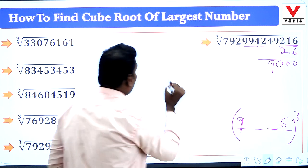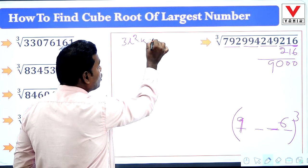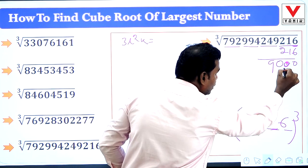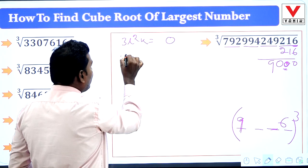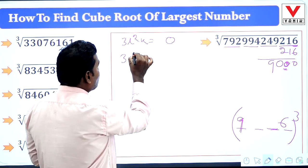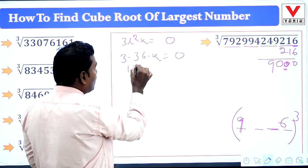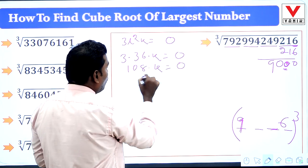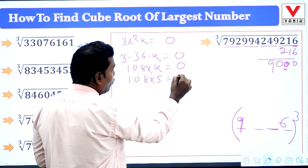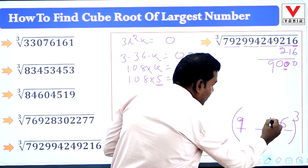Applying formula 3L²K to this position: the target is 0. L is 6, so 3 × 36 × K = 0, giving 108K = 0. Since 108 × 5 = 540 and the unit digit is 0, K = 5.